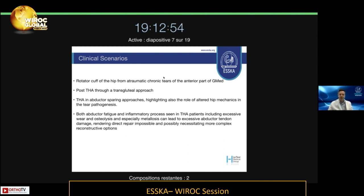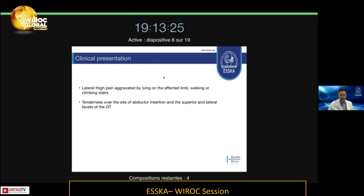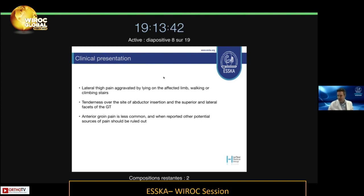Both abductor fatigue and inflammatory processes seen in patients with total hip arthroplasty — including excessive wear, osteolysis, and especially metallosis — can lead to excessive abductor tendon damage, such as in cases of ALTR, rendering direct repair impossible and possibly necessitating more complex reconstructive options. Clinically: lateral thigh pain aggravated by lying on the affected limb, walking, or climbing stairs, and limping. Tenderness over the site of abductor insertion on the superior lateral facets of the greater trochanter. Groin pain is less common and, if present, is likely associated with a degenerative process in the joint.